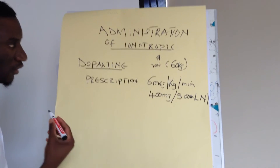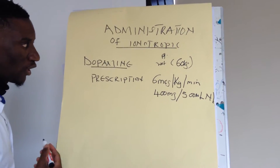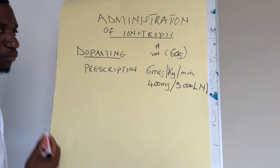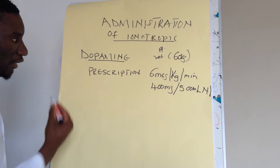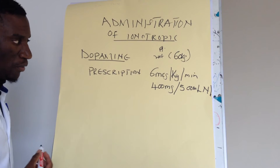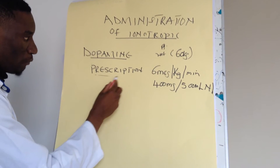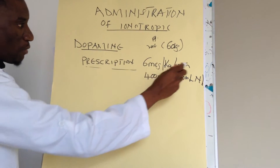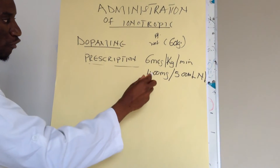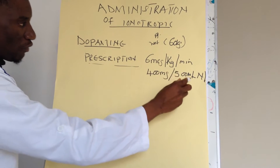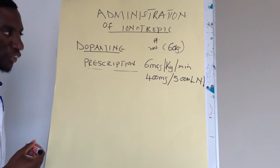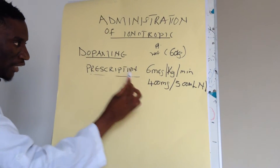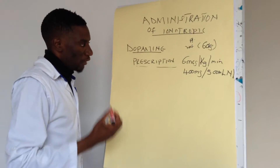Let's assume we have a patient on the ward who has come in with cardiogenic shock. The doctor wants to raise this patient's blood pressure using dopamine and writes a prescription saying: dopamine 6 micrograms per kg per minute, with 400 milligrams dissolved into 500 mL of normal saline. So how are you going to administer this? Let's start from the beginning.